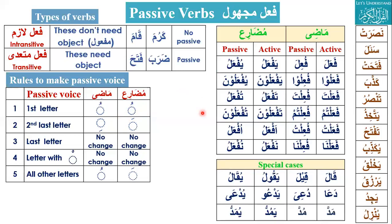Practice exercises: Nasarat means 'she helped' — its passive voice is nusirat. Nasara becomes nusira. Sa'ala means 'he asked' — its passive voice is su'ila. Sa'alat (she asked) also becomes su'ilat.